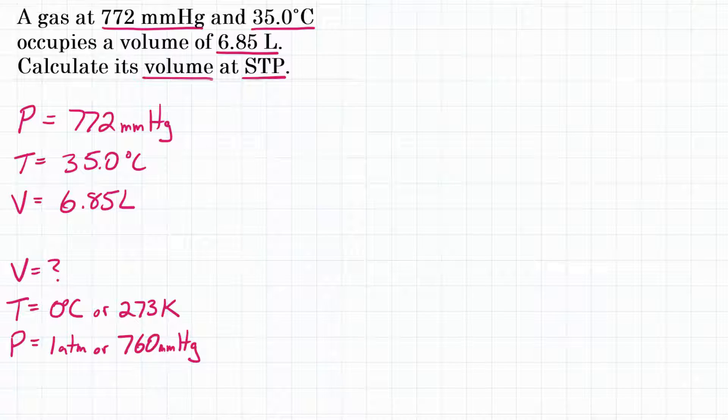We're going to solve this problem using the combined gas law, which is P1V1 over T1 equals P2V2 over T2. Since we have two sets, up top we have P1, V1, T1, and down here we have V2, T2, P2.